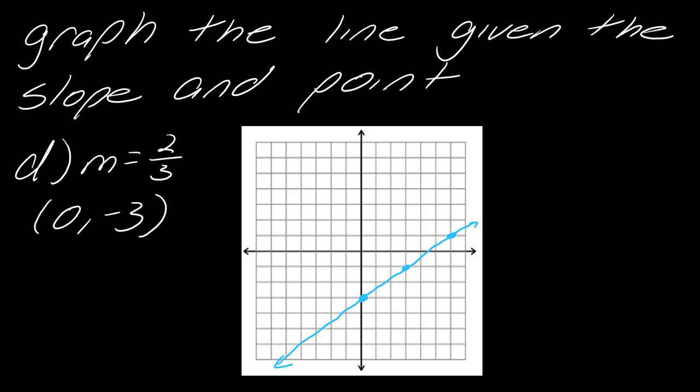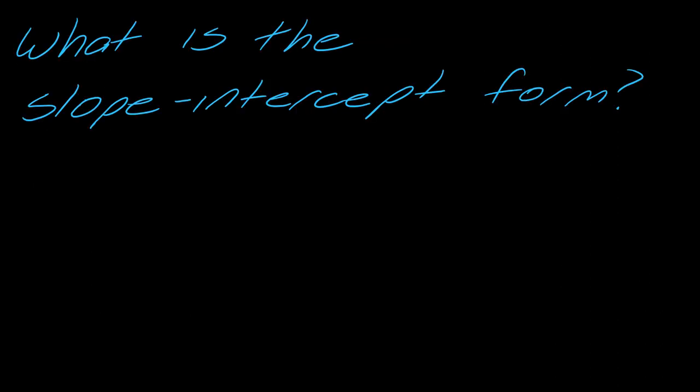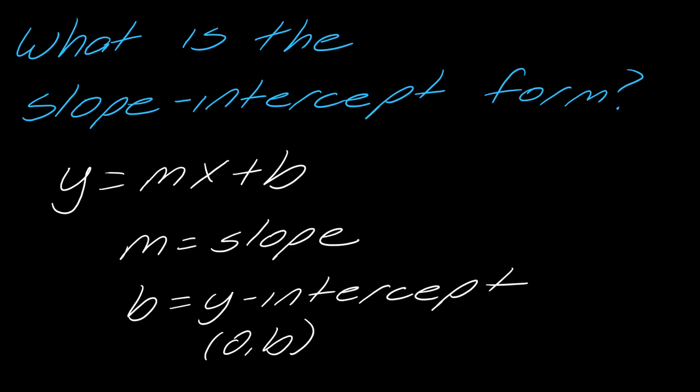This leads me into another question: what is slope-intercept form? The slope-intercept form of a line is y equals mx plus b, where m is the slope and b is the y-intercept. Remember, y-intercepts have the form where x is always zero, so we think of the y-intercept as the coordinate zero, b.